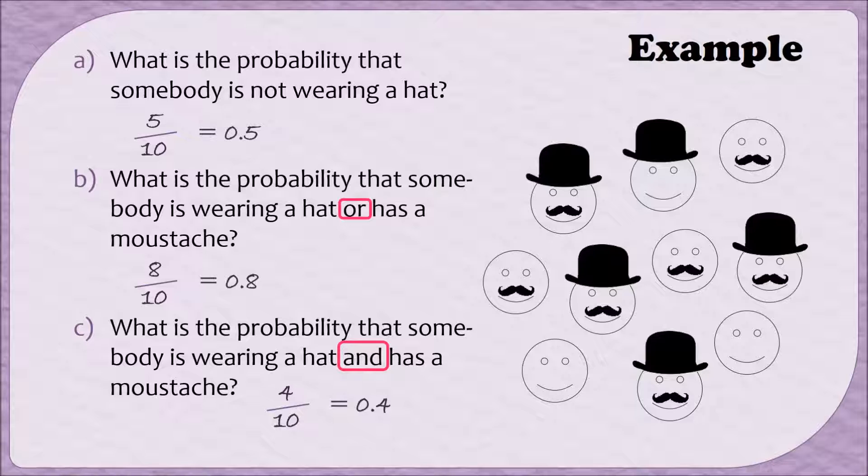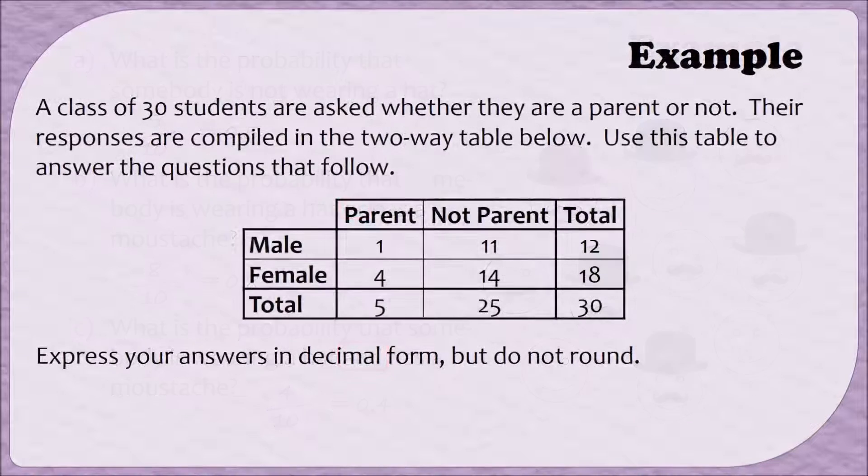Let's see these probabilities at work in a two-way table. A class of 30 students are asked whether they are a parent or not. Their responses are compiled in the two-way table below, and we shall use this table to answer the questions that follow. Please notice that this time we've been told to express our answers in decimal form, and also that we should not round our answers. Let's look at the first question.